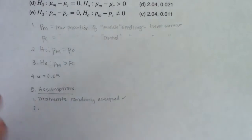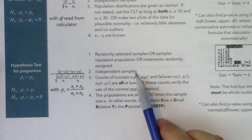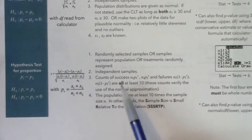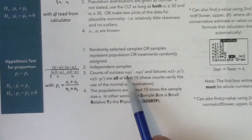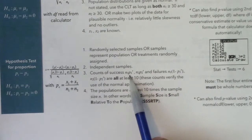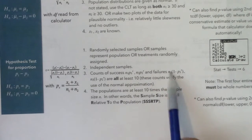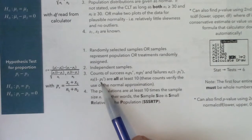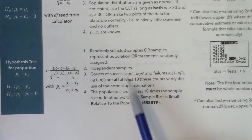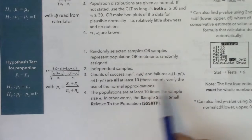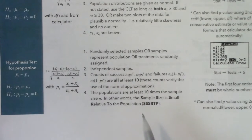For the second assumption, I need to state that I have independent samples. And so that I don't have to keep flipping back and forth, the third assumption requires successes and failures to be at least 10. I need N_M · p̂_M, N_M · (1 − p̂_M), N_C · p̂_C, and N_C · (1 − p̂_C) to all be greater than or equal to 10. I've got four products to check, using M's and C's for mulch and control.